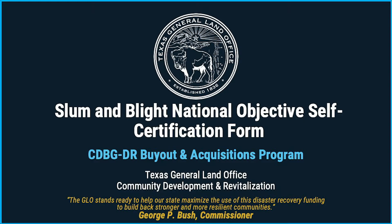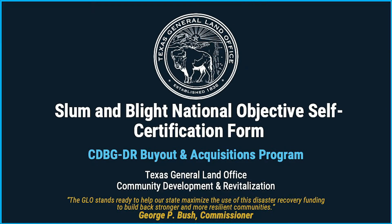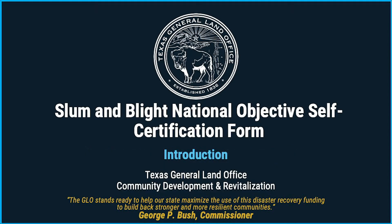The Slum and Blight National Self-Certification Form can be found on the Texas General Land Office website at recovery.texas.gov. To locate the document, go to the Local Buyout and Acquisition Program page, which is linked below in the description section of this video. Scroll down to the left-side checklist section and click on the Slum and Blight National Objective Self-Certification Form link. Once you click on the link, your computer will download the fillable document.